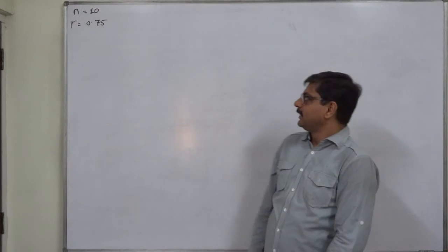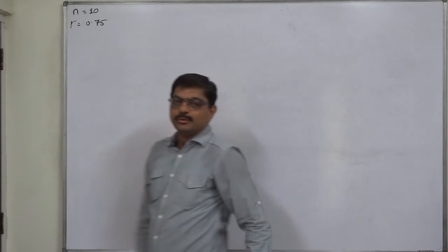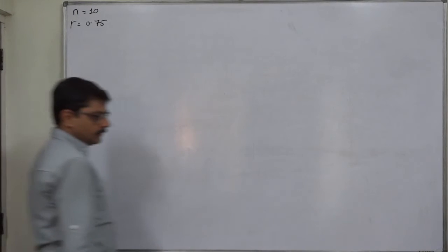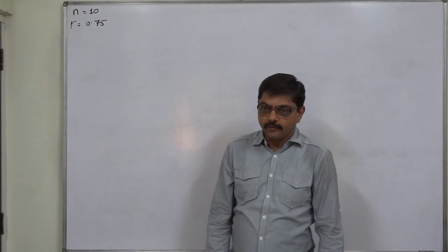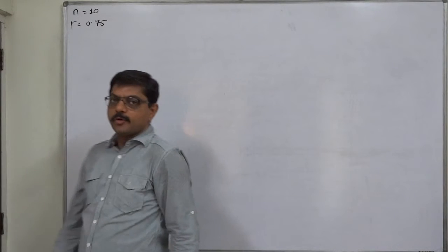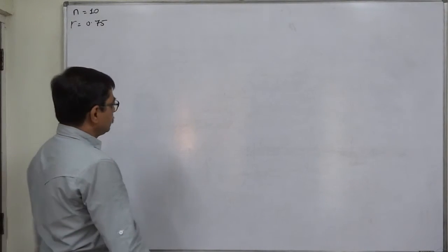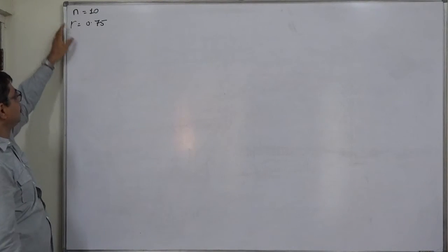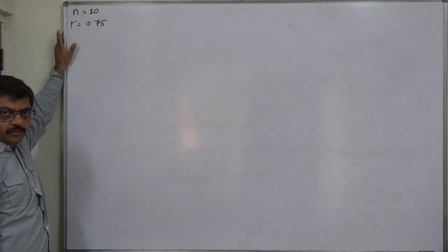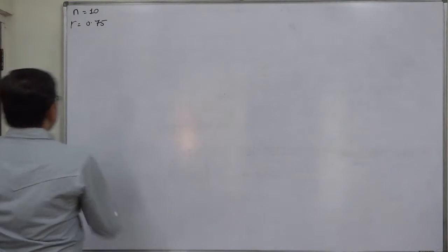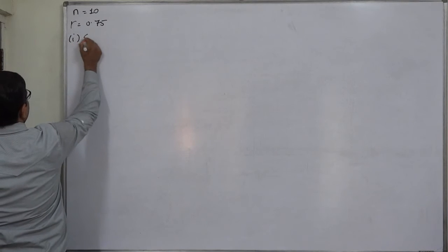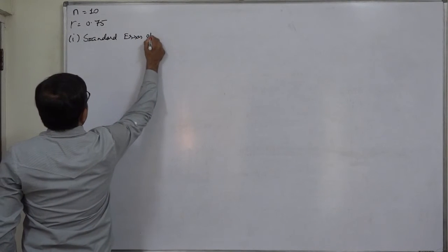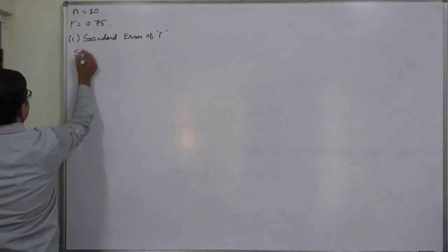Hello and welcome. In this lecture we are going to make some calculations on standard error of coefficient of correlation and probable error of coefficient of correlation. The information available is n, the sample size is 10, and the sample coefficient of correlation is 0.75. Let us first calculate the standard error. What is the formula of standard error?